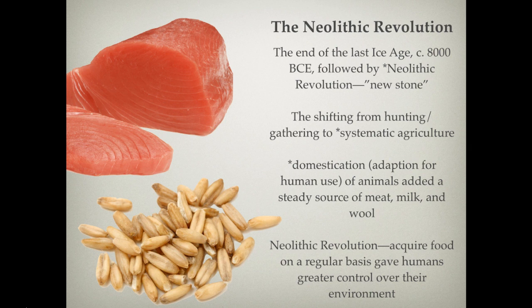This is characterized by that shift from hunting and gathering, a nomadic lifestyle, to sedentary, settled, systematic agriculture. This is also distinguished by, at the same time, the domestication of animals for human use — that adaptation of animals for human use. You can see this with wolves to dogs, wild sheep and goats to domesticated sheep and goats, and so forth.